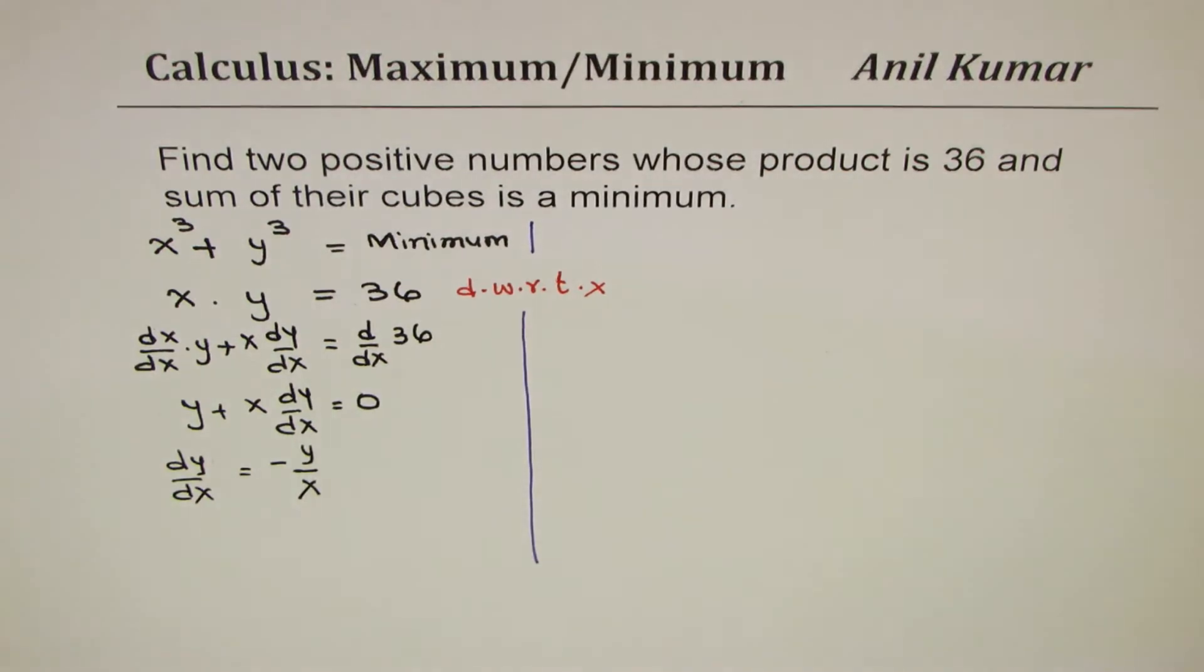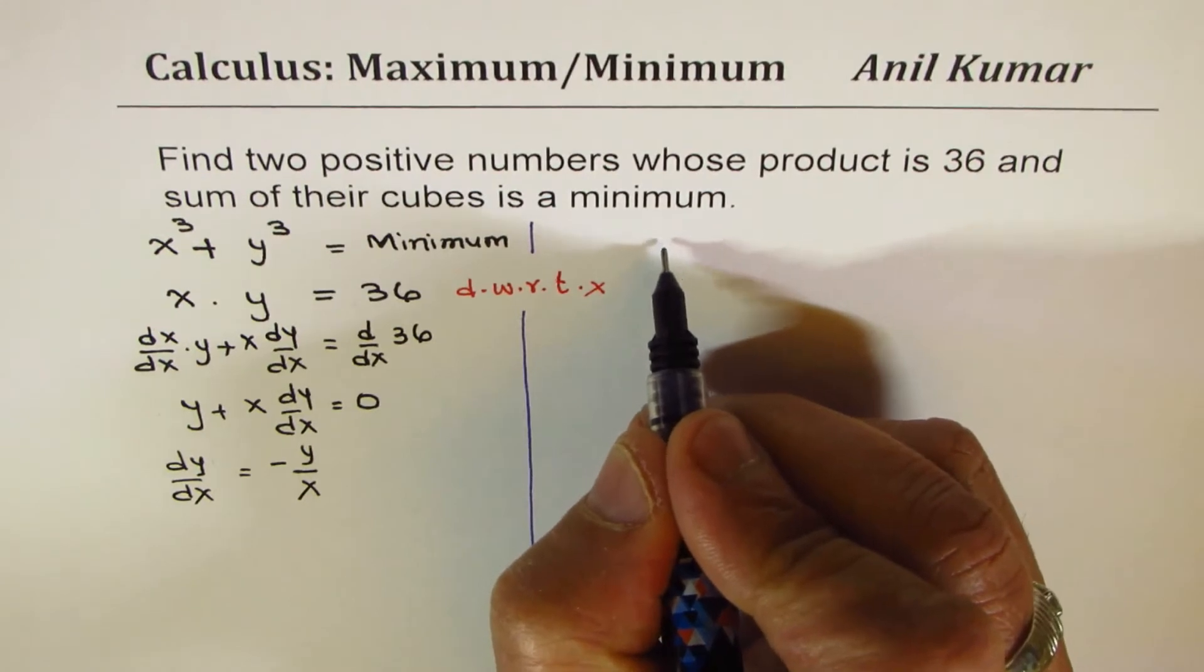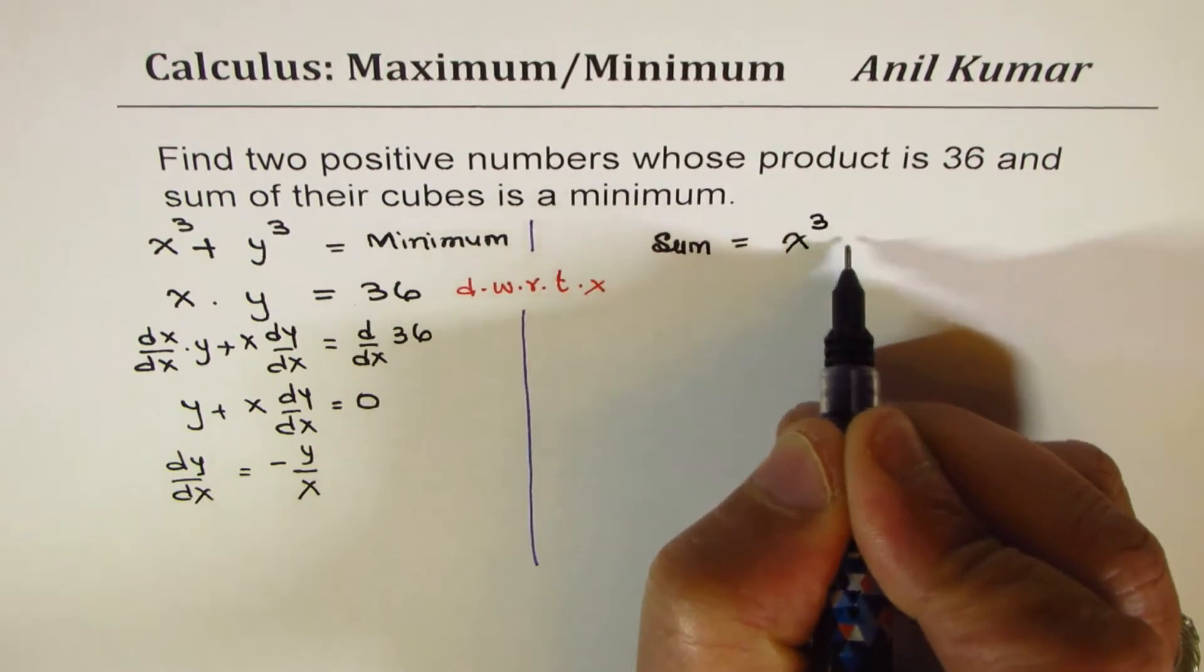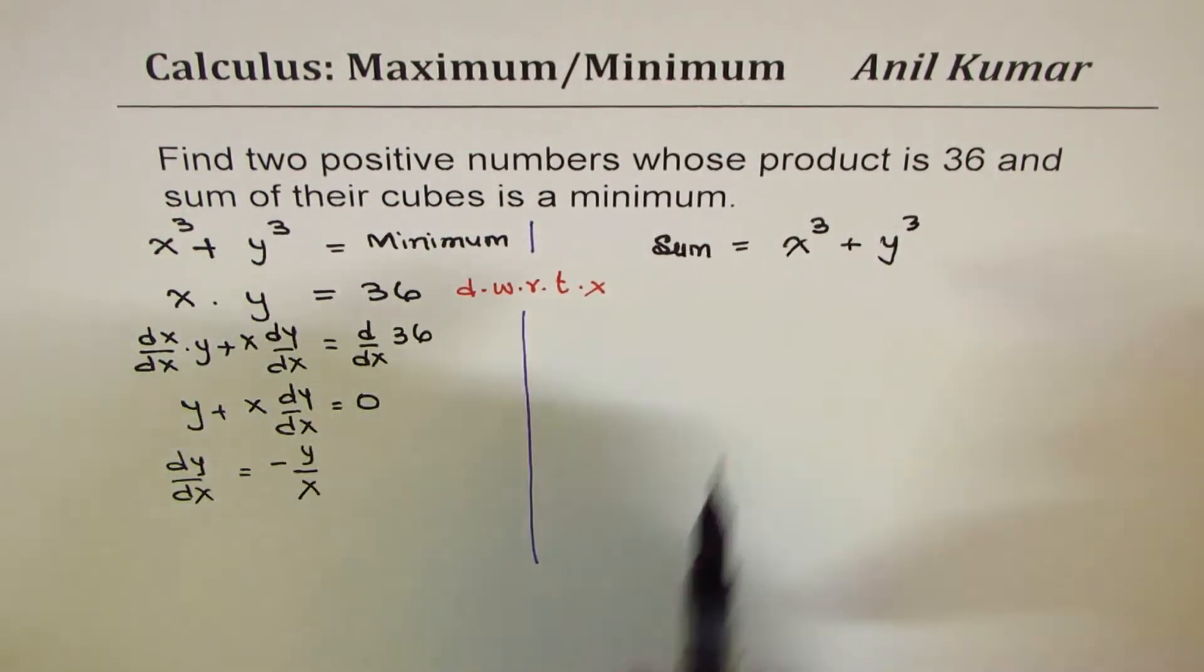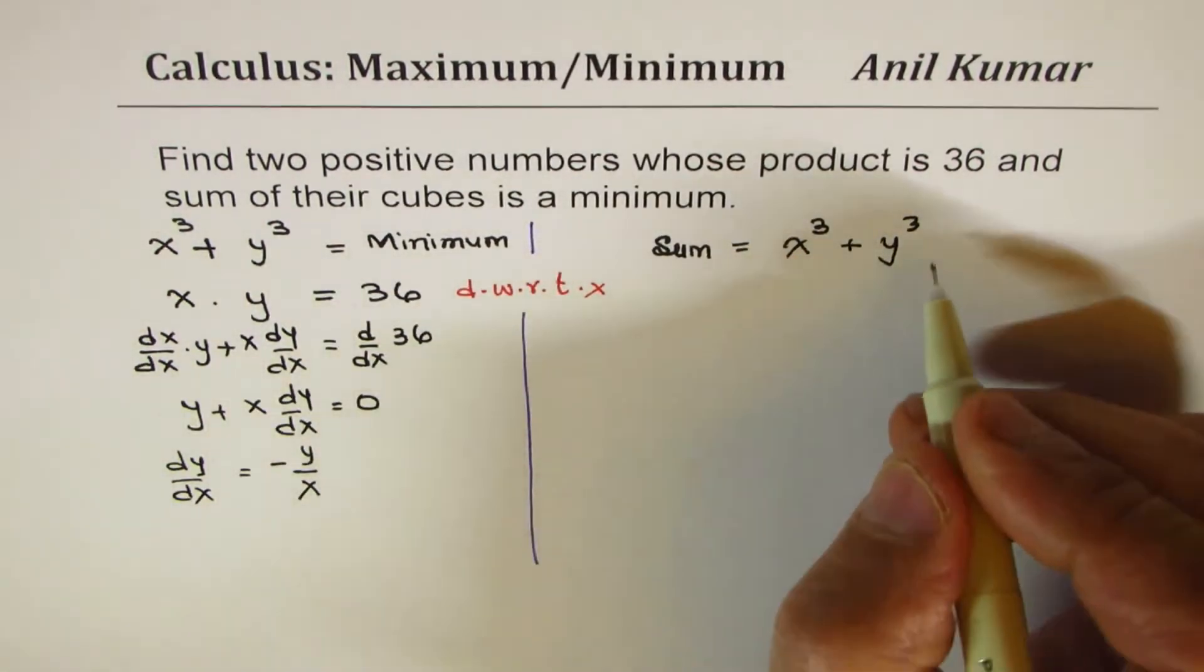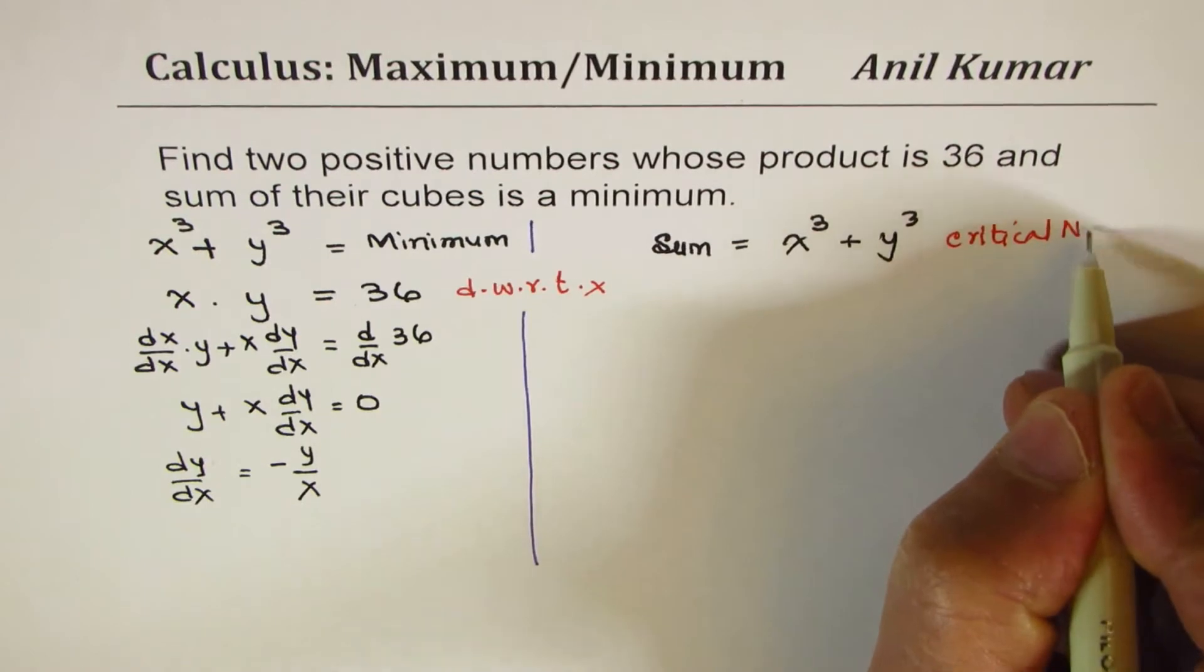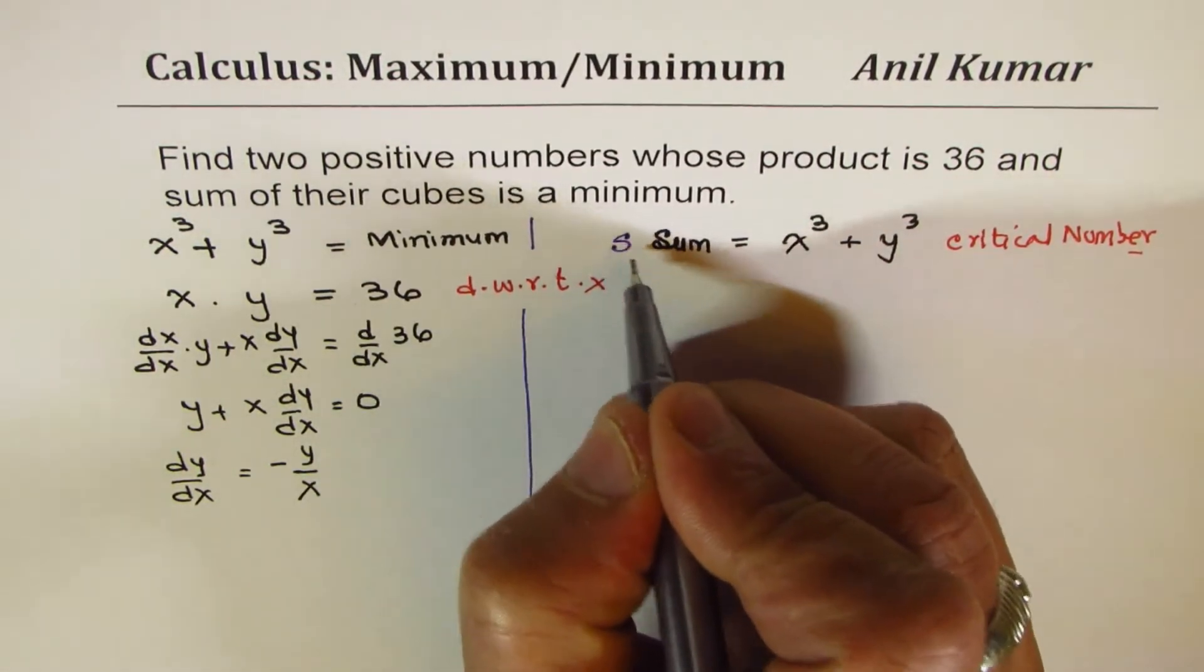Now let us look into the first equation given to us. We want to minimize the sum of cubes, right? So we want to minimize the sum which is x³ + y³. That means the derivative of this should be zero. We'll find a critical point here, so let's find a critical number.